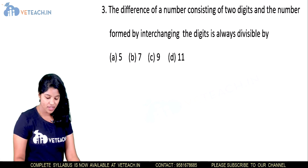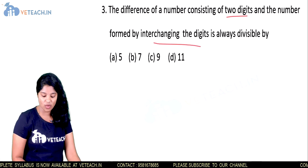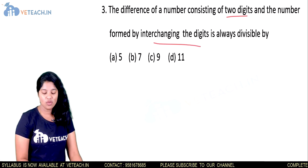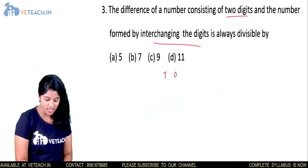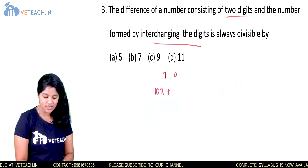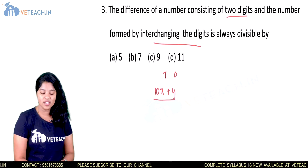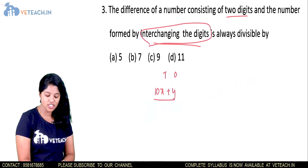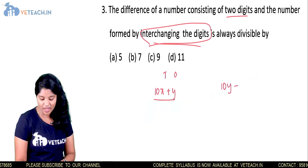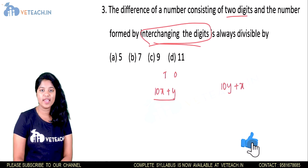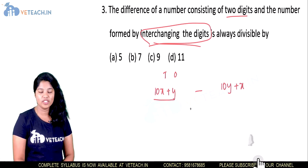Next question: the difference of a two-digit number and the number formed by interchanging its digits is always divisible by? Let the two-digit number be 10x plus y, where x is in the tens place and y is in the units place. The number with interchanged digits is 10y plus x.